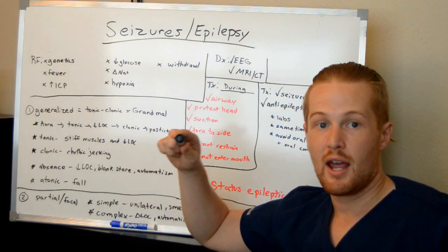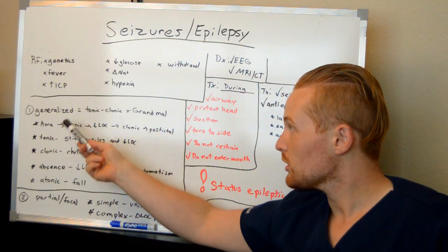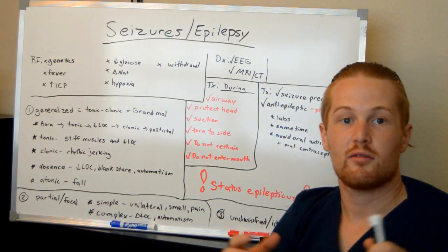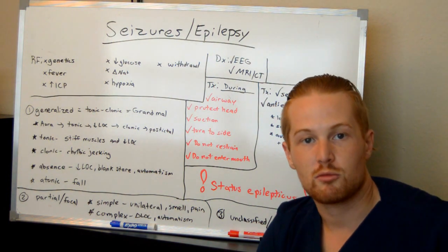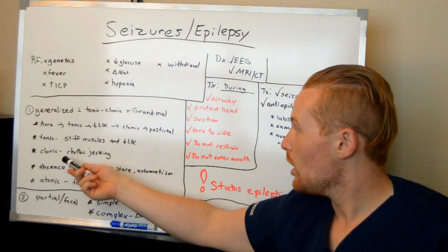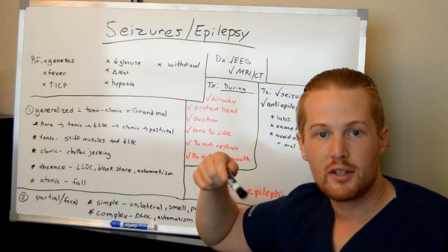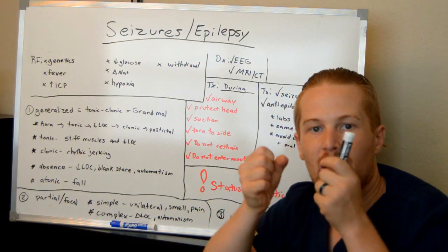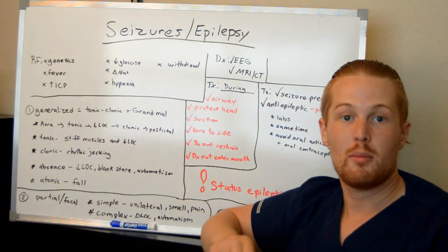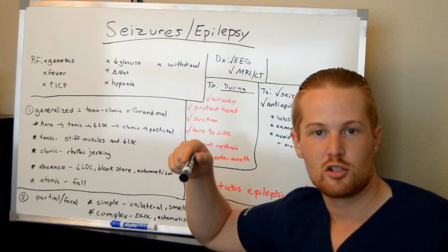With tonic-clonic seizures, you can have a tonic seizure, a clonic seizure, or a tonic-clonic seizure — all types of generalized. The tonic phase is characterized by increased muscle tone, the body becomes rigid, and there is loss of consciousness. The clonic phase is rhythmic jerking, where the patient may have incontinence or bite themselves. A patient may have just one phase, or they may have a tonic phase then lose consciousness, then enter the clonic phase.